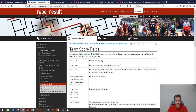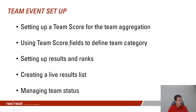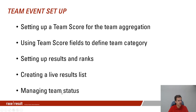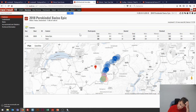Let's look at a concrete example. To set up a team event, I recommend setting up a team score just for the team aggregation that doesn't calculate any results. You may then use this team score to calculate a team category. We'll see how to set up results and ranks, create a live result list, and manage team status. Let's first look at the Perskindol Swiss Epic, a mountain bike team stage race that happened in the Swiss Alps a couple of weeks ago — teams of two riders.